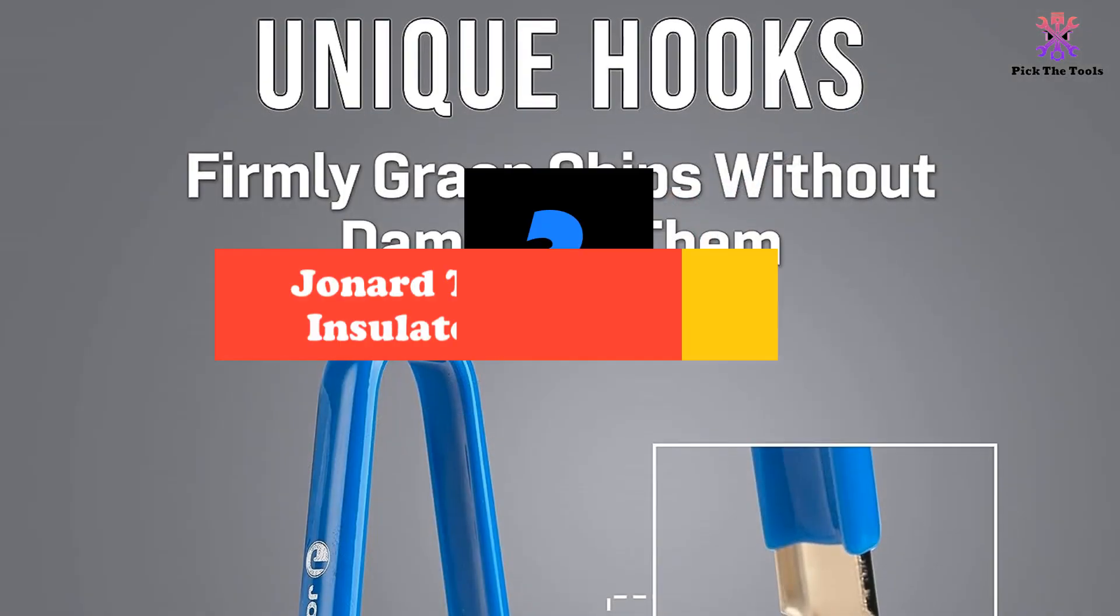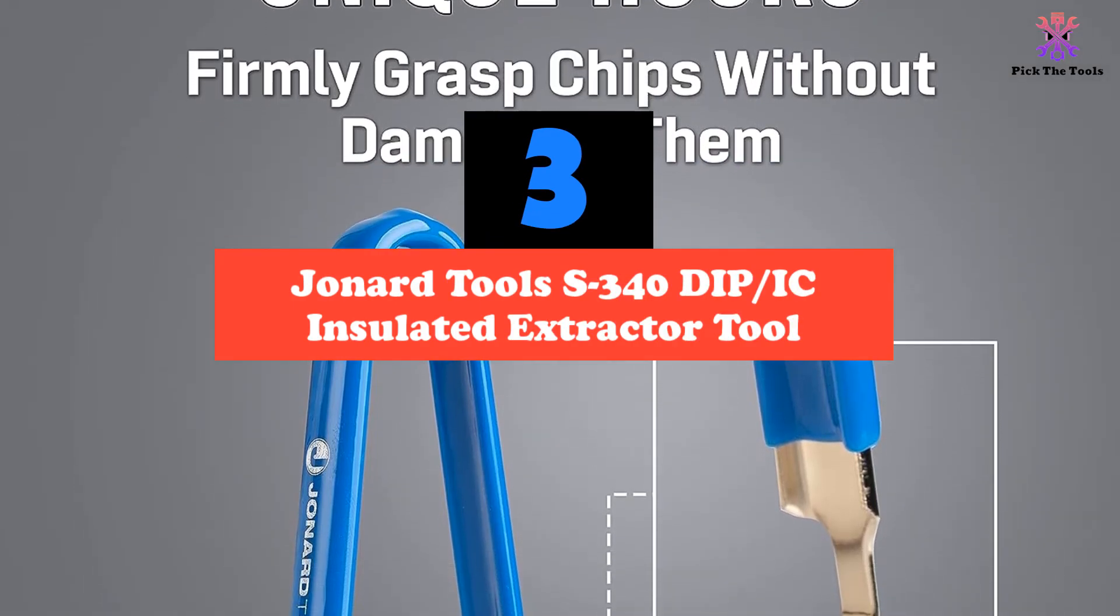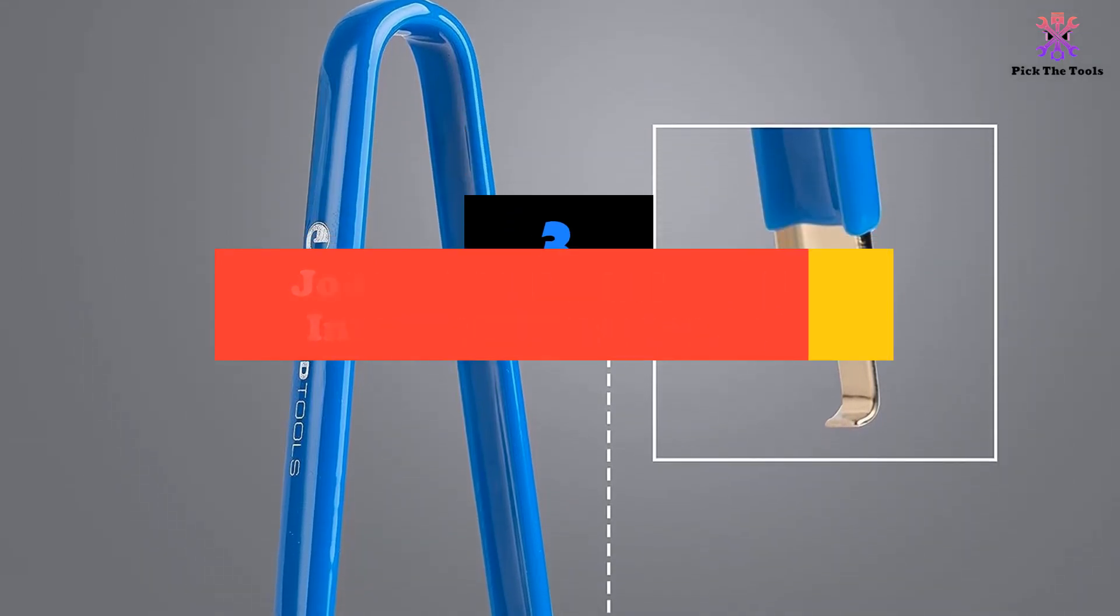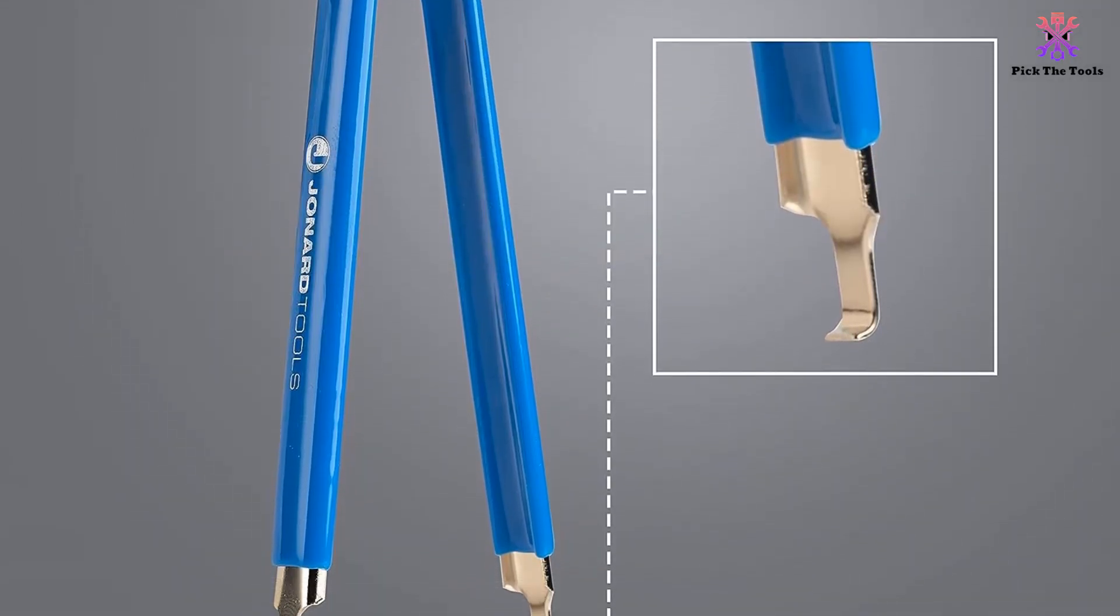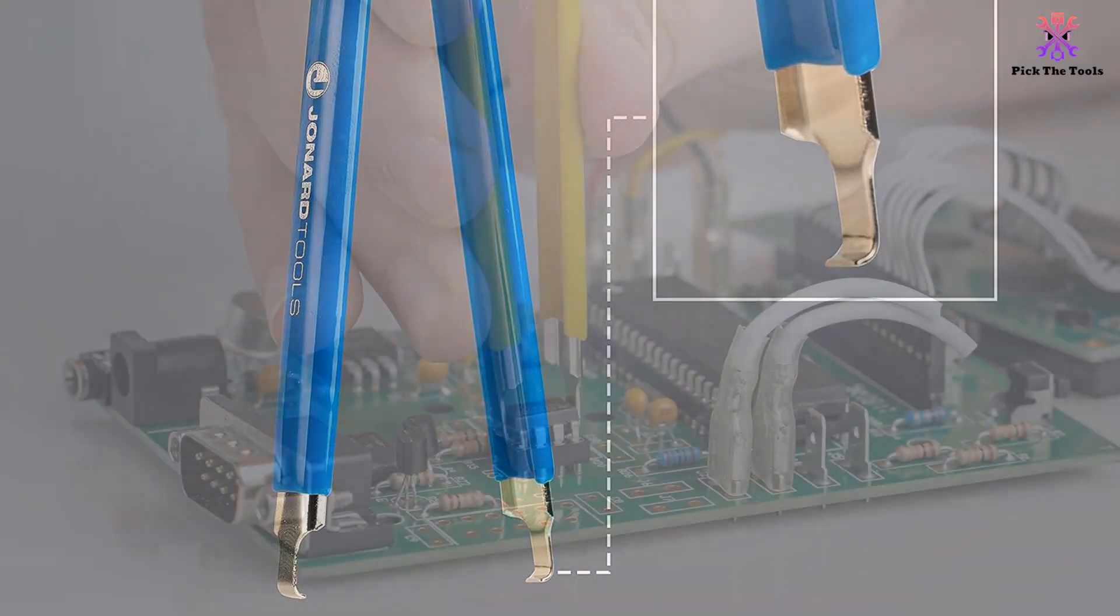At number 3, we have the Jannard Tools S340DiP IC insulated extractor tool. This tool is designed to extract internal components from dip sockets and LSI, MSI, and SSI devices with 8-24 pins.